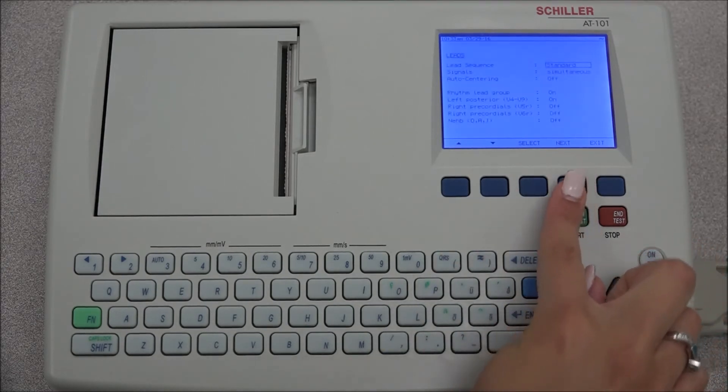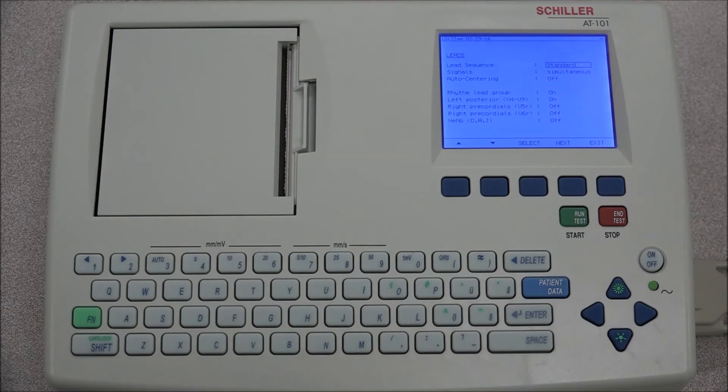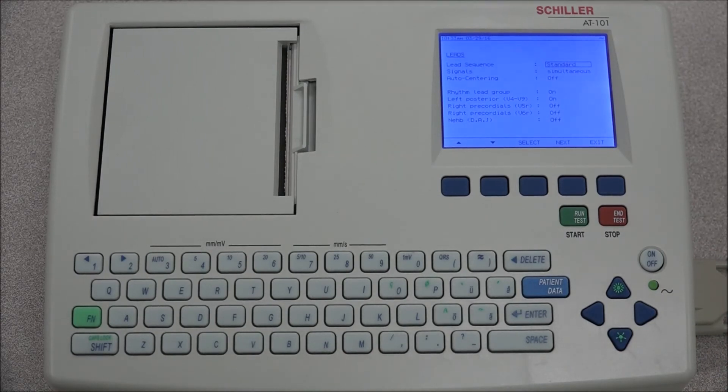Under the leads tab, the lead sequence can be selected, as well as defining the type of signal. The auto-centering can be turned on or off, as well as the rhythm lead group.